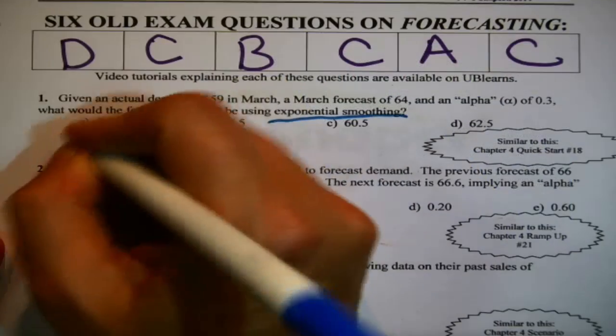Let's look. Given an actual demand of 59 in March, a March forecast of 64, and an alpha of 0.3, what would be the forecast for April using exponential smoothing? Now what is it that I mean by staying organized? Simple question, one sentence. First off, asking for exponential smoothing, let me think, what is the formula for that?